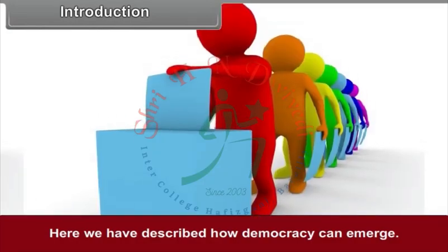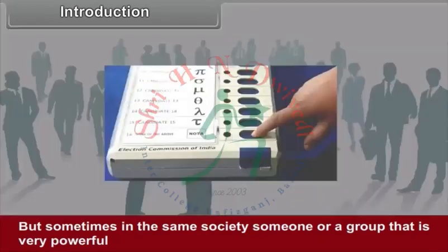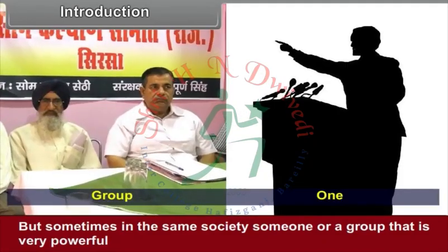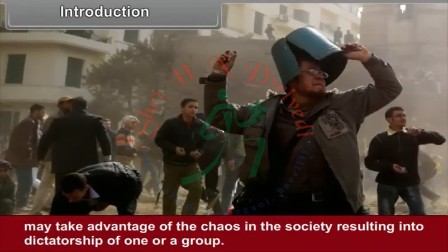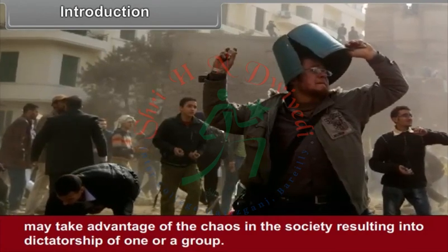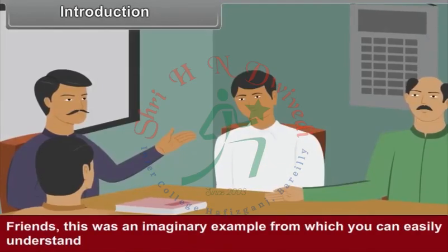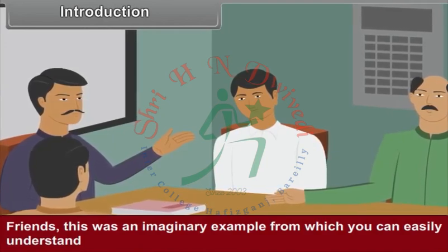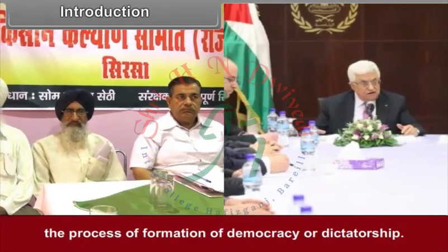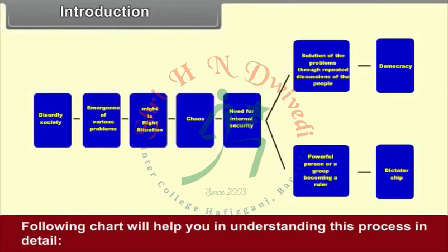Here we have described how democracy can emerge. But sometimes in the same society, someone or a group that is very powerful may take advantage of the chaos in the society, resulting in dictatorship of one or a group. This was an imaginary example from which you can easily understand the process of formation of democracy or dictatorship. The following chart will help you in understanding this process in detail.